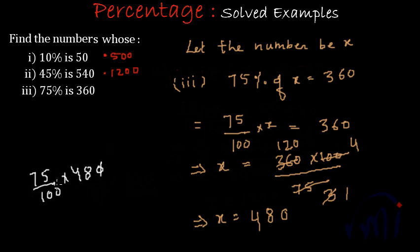0 will cancel 0. 5 1's are 5, 5 5's are 25, 5 2's are 10, 2 1's are 2, 2 2's are 4, 2 2's are 8. And this will be equal to 15 2's are 60. 6 carried forward, 15 2's are 30 plus 6 is 36.